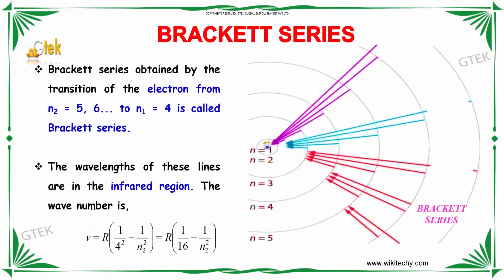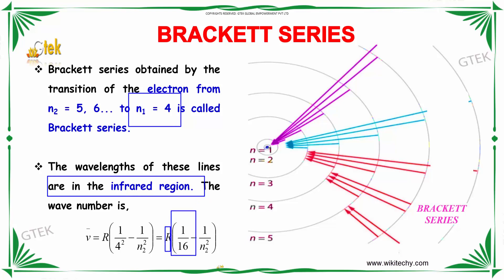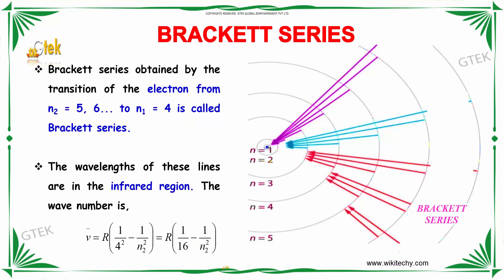For the Brackett series, the electron moves from an outer orbit to the fourth orbit. The wavelengths of these lines are in the infrared region, and the wave number is ν̃ = R(1/16 − 1/n2²).